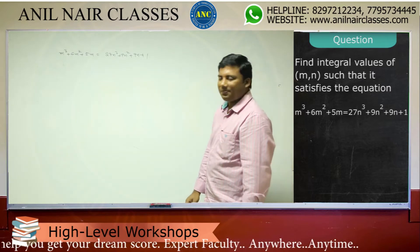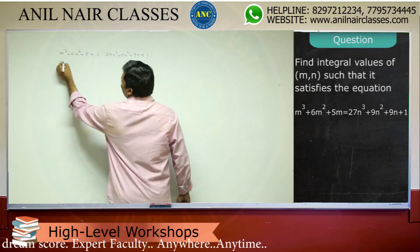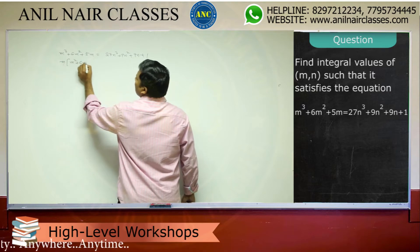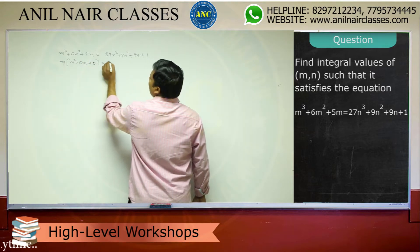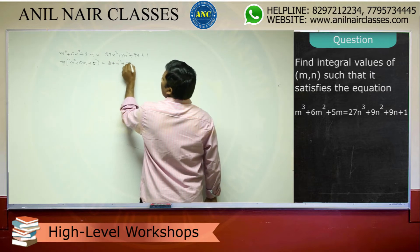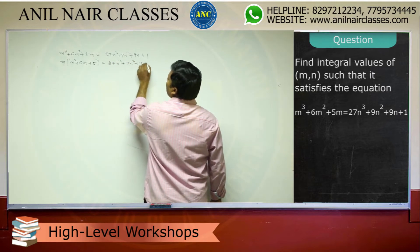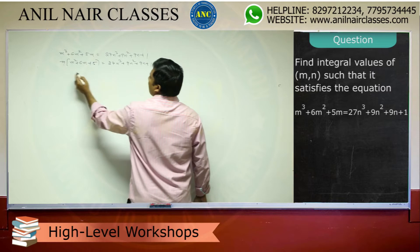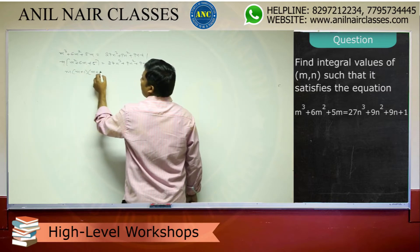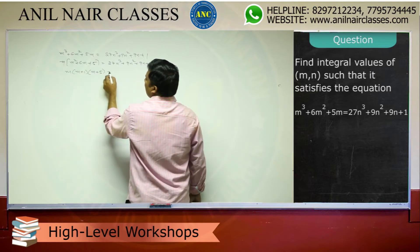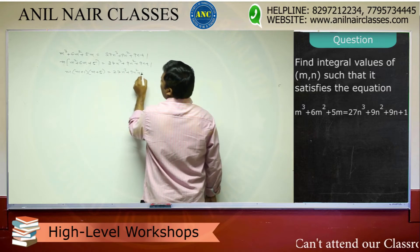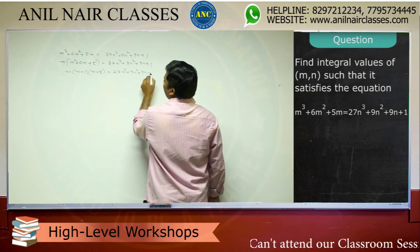Now, this is nothing but m into m square plus 6m plus 5, equivalent to 27m cube plus 9m square plus 9m plus 1. This factors as m into m plus 1 into m plus 5, equivalent to 27m cube plus 9m square plus 9m plus 1.